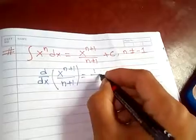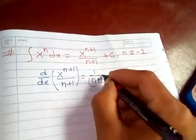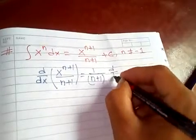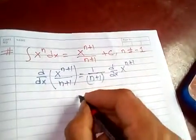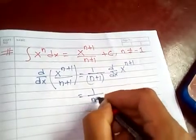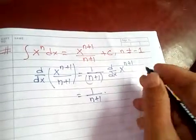Now since n plus one does not contain x, it will come out before the differentiation. What will be left is the differentiation of x to the n plus one.